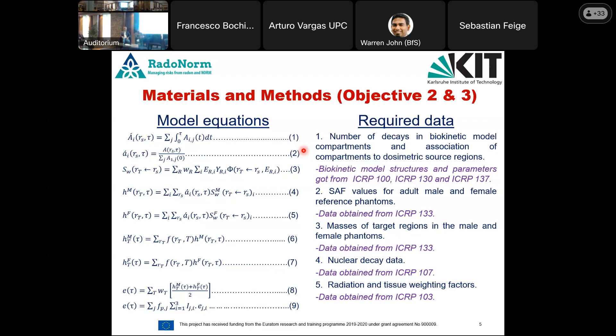For target regions comprised of one source region, equations four and five are used; for those comprising several source regions, equations six and seven apply. Equation eight gives the sex-averaged equivalent dose to the entire body for reference male and female. For radon progeny, since activity is assessed in terms of potential alpha energy concentration, equation nine converts the dose from sieverts per becquerel to sieverts per working level month, as used in mines, or sieverts per millijoule-hour per cubic meter.